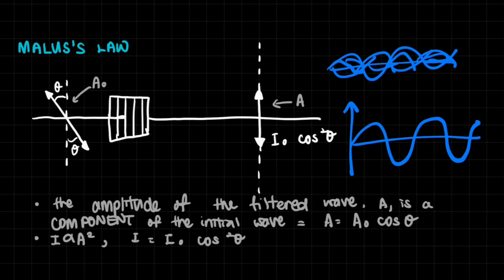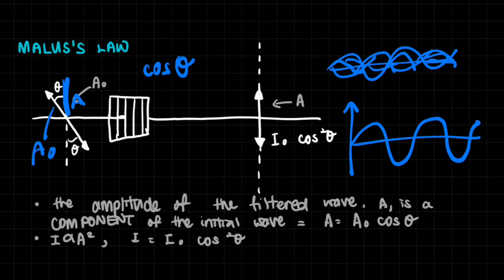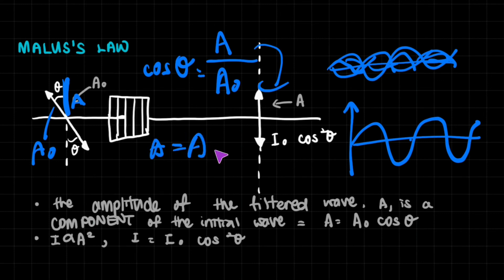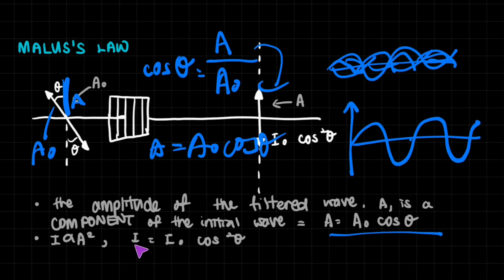If you look at this in a trigonometrical sense — and you can check out my video on resolving forces if that helps — A_O is the original amplitude. Cosine theta gives the ratio between A and A_O. Therefore, the resultant amplitude coming out is A = A_O cos(θ). Now, we know that intensity is directly proportional to amplitude squared. This is why we come up with the equation that the intensity of the wave coming out equals the original intensity times cosine squared theta: I = I_O cos²(θ).